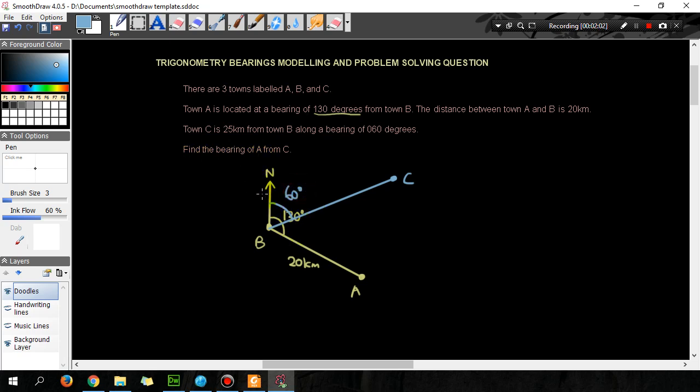Find the bearing of A from C. So from town C I have the north, and I need to find the angle of the line between the north to town C. It's this angle here. I need to know what that angle is. That's basically the answer. So now that we have a diagram, what do we have?